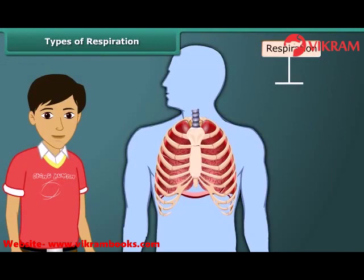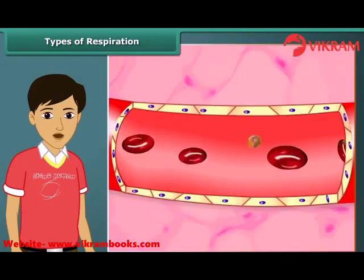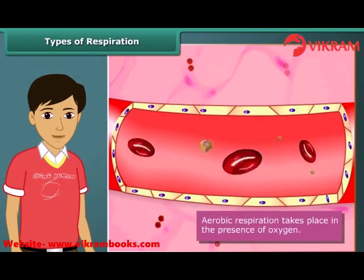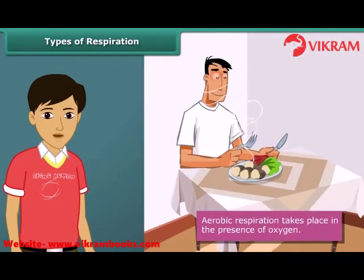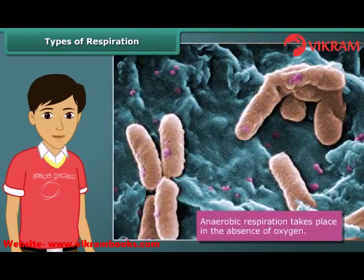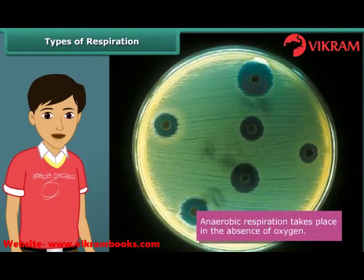Respiration is of two types: aerobic and anaerobic. Aerobic respiration is the respiration that takes place in the presence of oxygen. In this kind of respiration, food is broken down into glucose in the presence of oxygen. Anaerobic respiration is that respiration which takes place in the absence of oxygen. This kind of respiration is found in some microorganisms such as bacteria that inhabit places where oxygen is missing. The energy produced in aerobic respiration is more than the energy produced in anaerobic respiration.